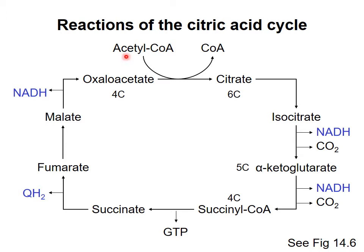The two carbons of the acetyl group of acetyl-CoA are transferred to a four carbon molecule called oxaloacetate to make the six carbon molecule citrate. It's this molecule that gives its name to the cycle. After a rearrangement, one carbon is oxidized and released as CO2. The electrons are transferred to NAD+ to make NADH, and we're left with a five carbon molecule.